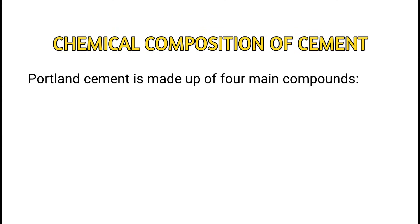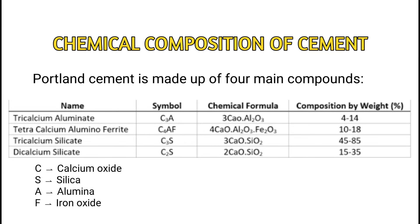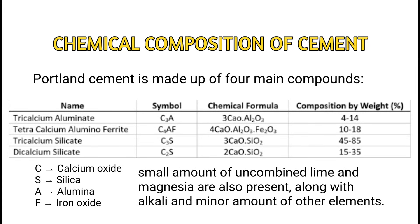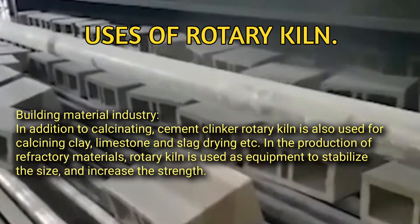Chemical composition of cement: Portland cement is made up of four main compounds — tricalcium silicate, dicalcium silicate, tricalcium aluminate, and tetracalcium aluminoferrite. In abbreviated notation, these compounds are designated as C3S, C2S, C3A, and C4AF, where C stands for calcium oxide, S for silica, A for alumina, and F for iron oxide. Small amounts of uncombined lime and magnesia are also present, along with alkali and minor amounts of other elements.